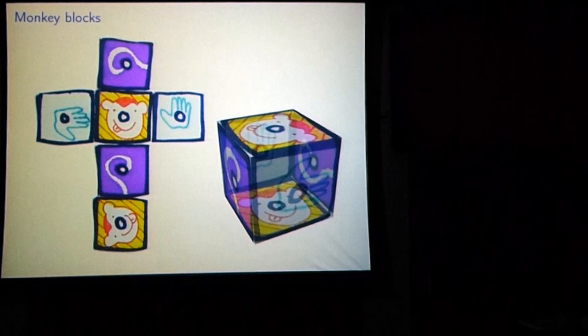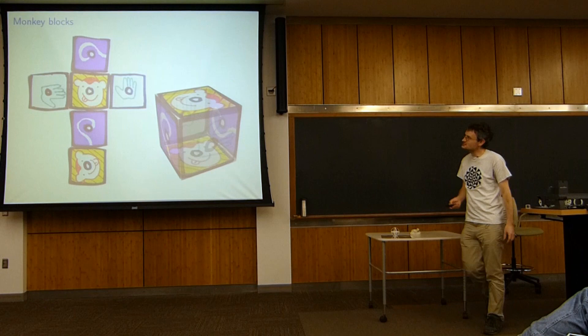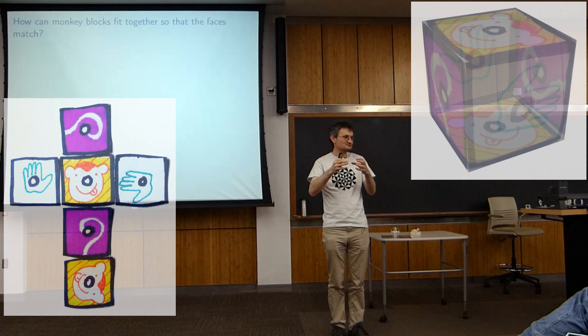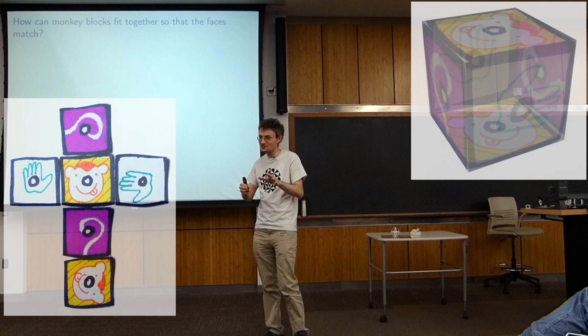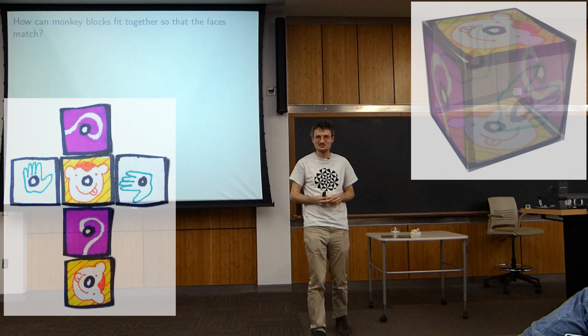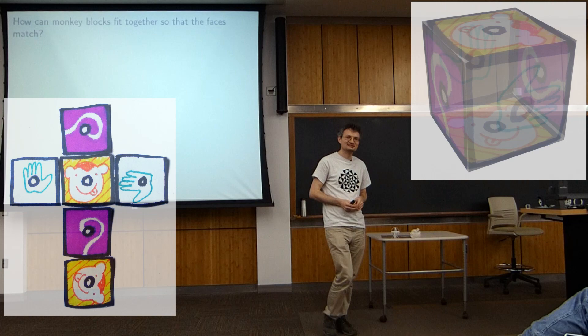Now we're finally going to play with these monkey blocks. Get together with your neighbors. Here's the question for the next five minutes: how can these monkey blocks fit together? When I fit them together, the faces have to match. Be careful — some faces look similar but aren't quite the same. There are two monkey faces: one has the tongue sticking out to the left and the other to the right. You have to match them up so that those pictures match each other.